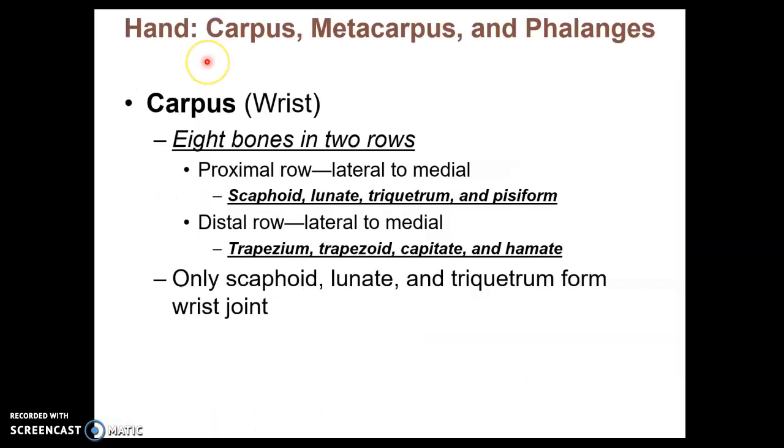Moving distal down the upper extremity, we get to the carpus or carpal bones. Those are your wrist bones. There are eight of them that exist in two rows. These are the carpal bones in the proximal row. These are the carpal bones in the distal row, and you should be able to locate which row they're in. We're going to see a picture in a minute.